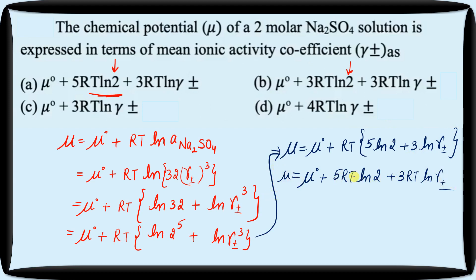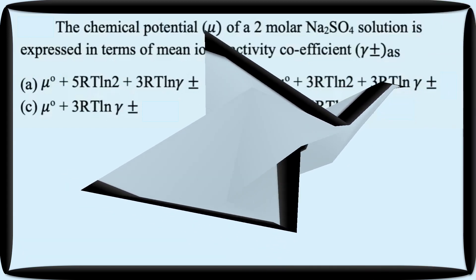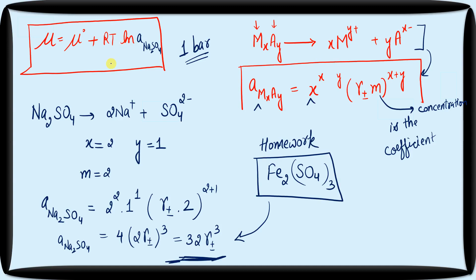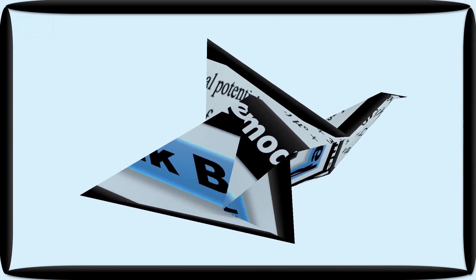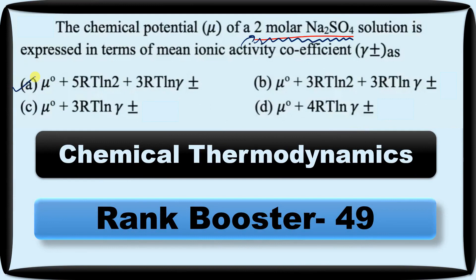The answer is Option A. This question was asked for 4 marks. The two most important things here: you should know the formula for chemical potential, and you should know how to express the activity of an electrolyte in terms of the mean ionic activity coefficient. If you don't know the activity coefficient terms, you won't be able to solve the question. The correct answer is Option A. I hope this video is helpful. When the next rank booster comes, I will try some organic or inorganic question. Happy learning!